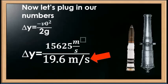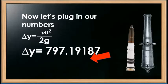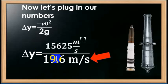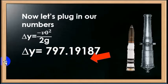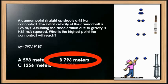After plugging into your calculators, 15,625 divided by 19.6 gives us approximately 797 meters. Coming back to our answer selections, 797 is closest to 796 meters, so the answer is B — 796 meters. These are the types of questions you'll see on the mechanical comprehension areas of military aptitude tests, so it's something you want to become familiar with.